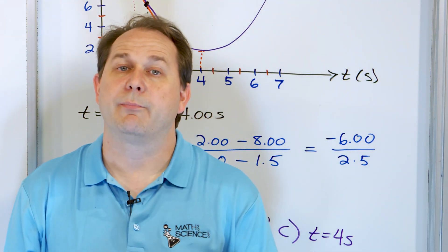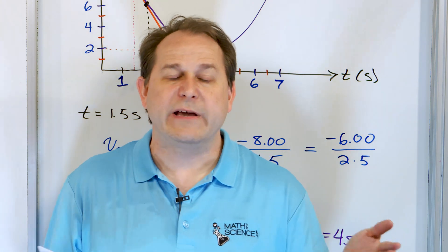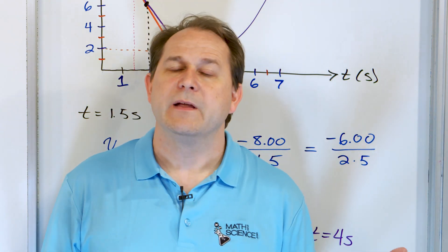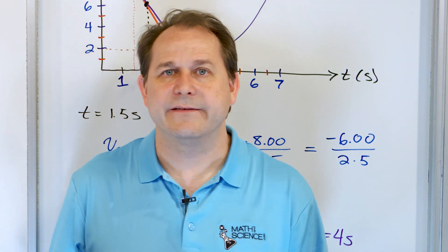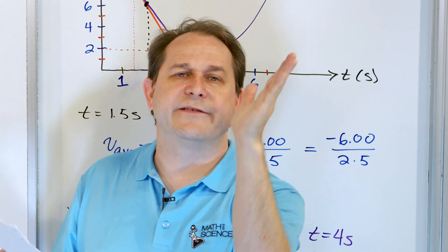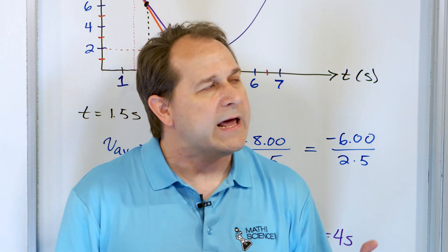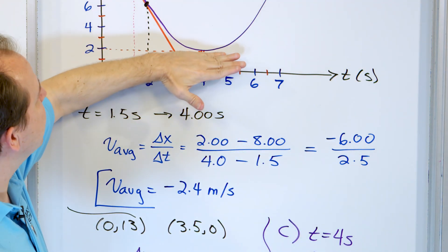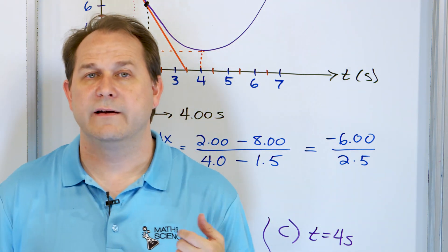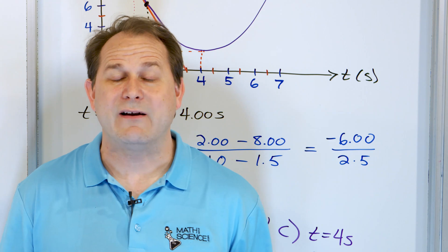Just one more problem with a couple of parts showing how to handle a graph — but it's all the same concepts. From a position graph, we find average velocities by pulling two points and computing delta x over delta t. For instantaneous velocity, draw a tangent line at the point of interest and find its slope. When the velocity is zero, look for where the slope of the tangent line is zero. Follow along to the next lesson where we begin to talk about acceleration.